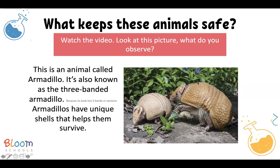It has three sections — this is the first one, this is the second one, and this is the third one. This is what makes it able to roll up into a ball. It has a unique shell to help it survive.